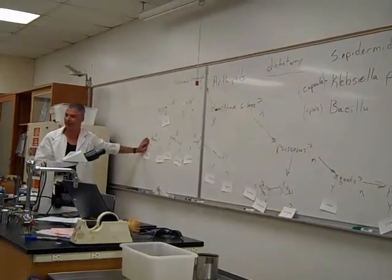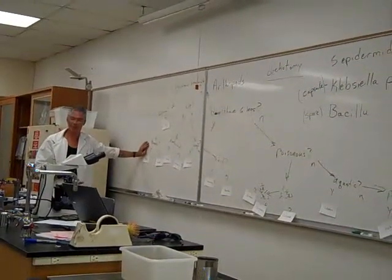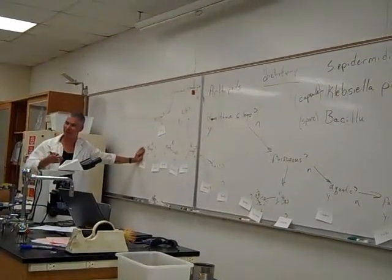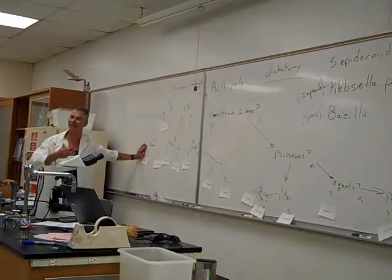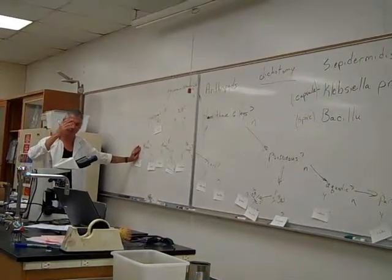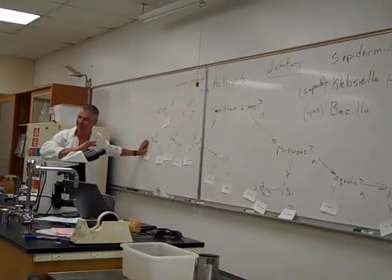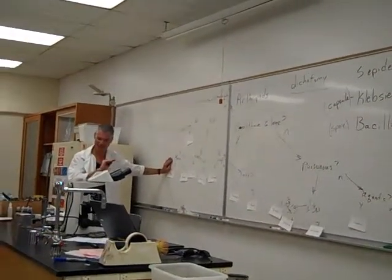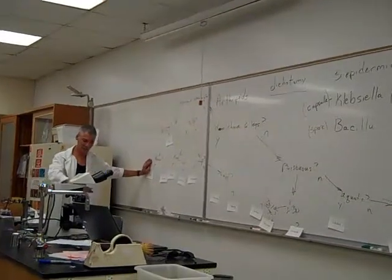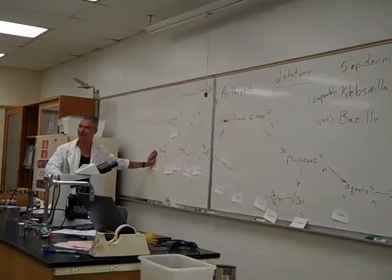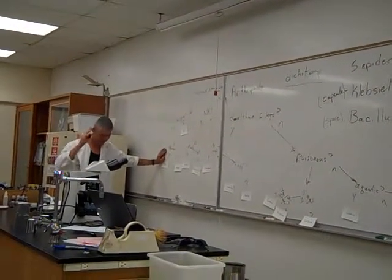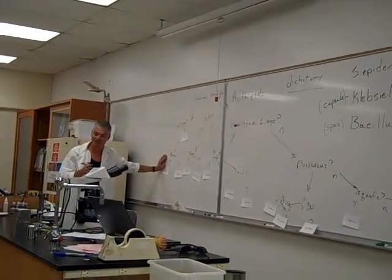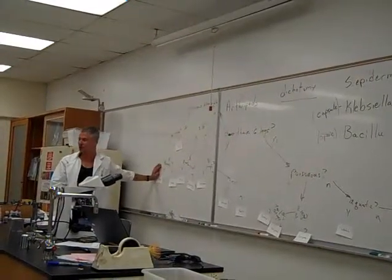We've done deductive reasoning here. Sherlock Holmes, that's the way he rolled. He started very, very general statements that caused him to be able to eliminate the impossibilities. And then he moved to more specific details and allowed him to remove and eliminate more and more impossibilities. And he said that once you've removed all of the impossibilities, what you have left, no matter how improbable, must be the truth.